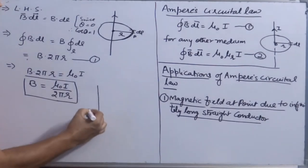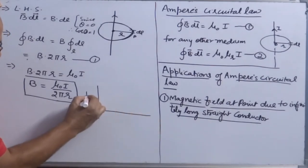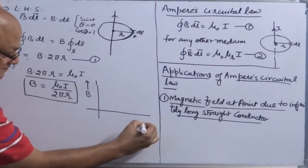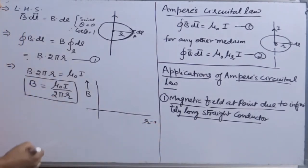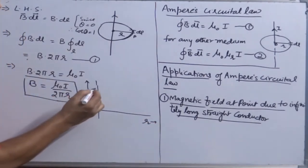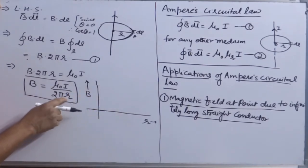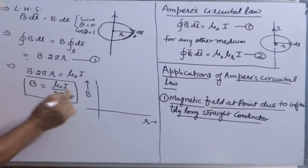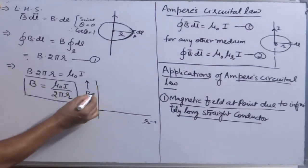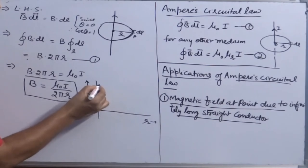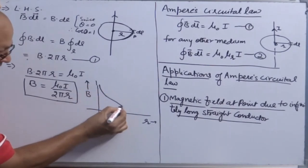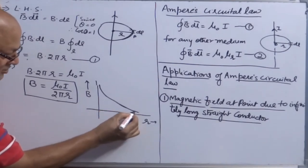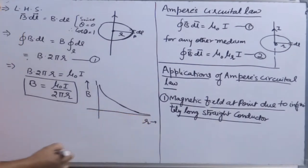If you plot a graph between magnetic field B and position of a point, B varies reciprocally with distance. So when r equals 0, B will be infinity, and when r is infinity, B is 0. The graph won't touch either the y-axis or x-axis — it starts from somewhere parallel to the y-axis and then drops parallel to the x-axis. That's the first application.